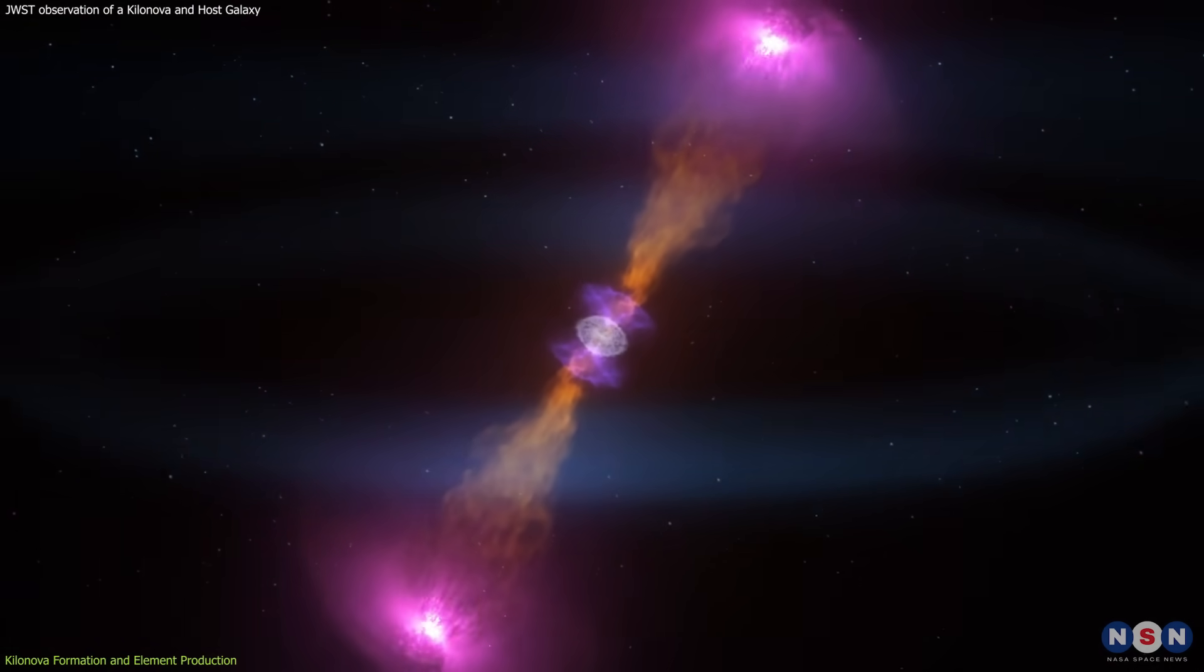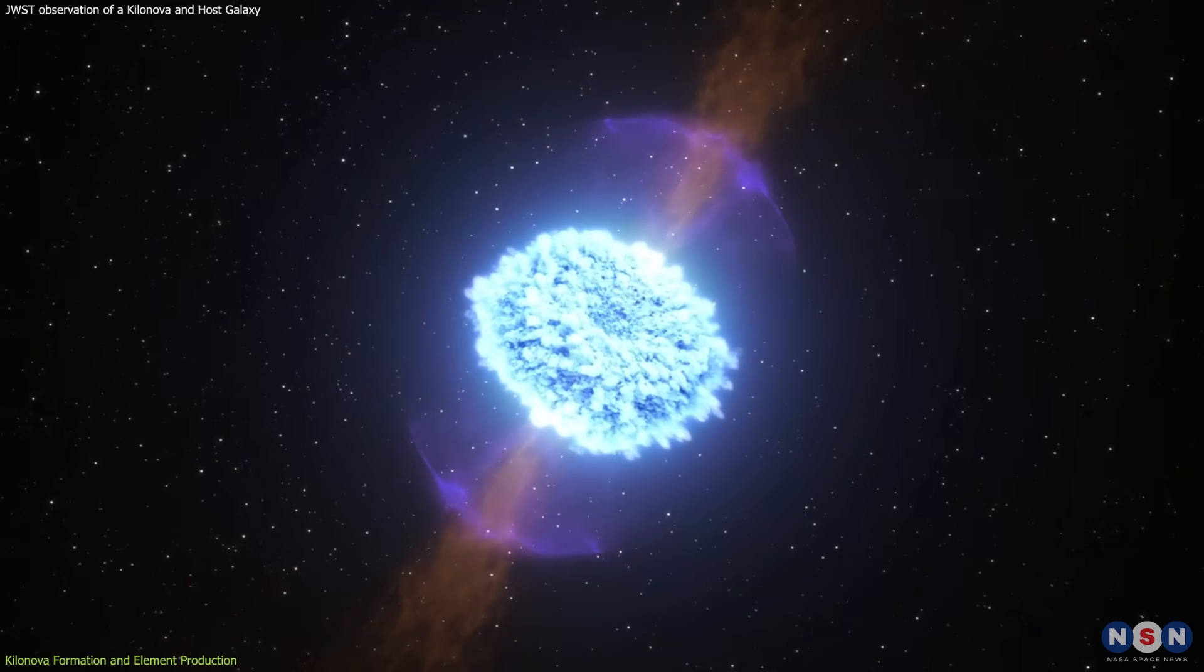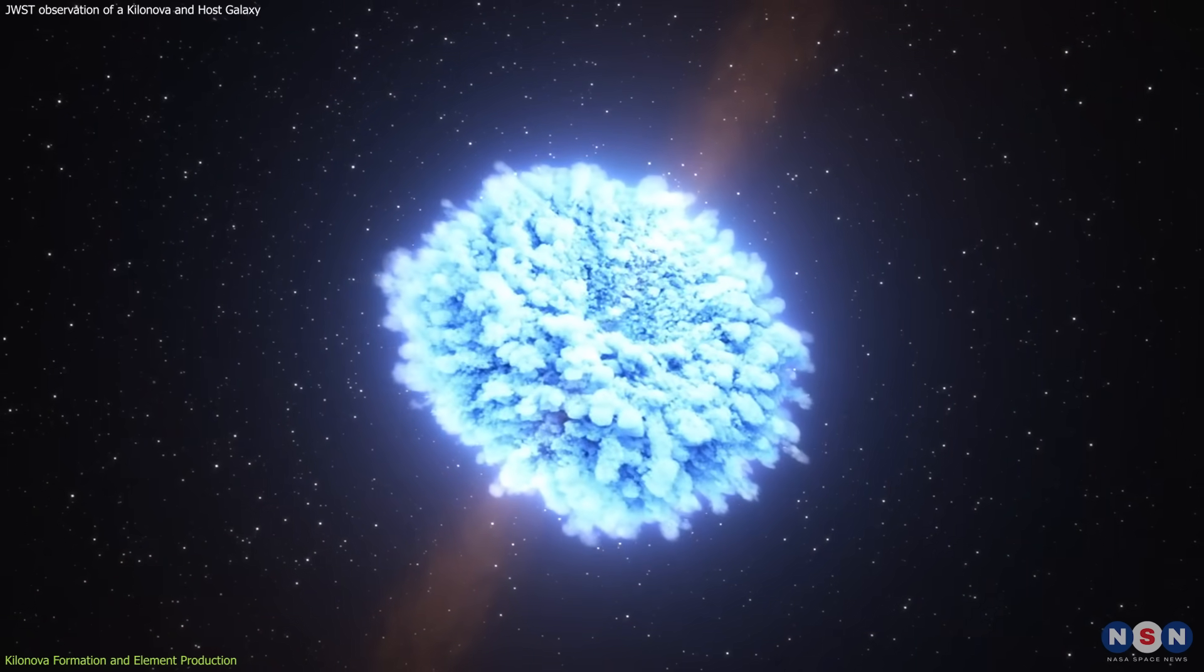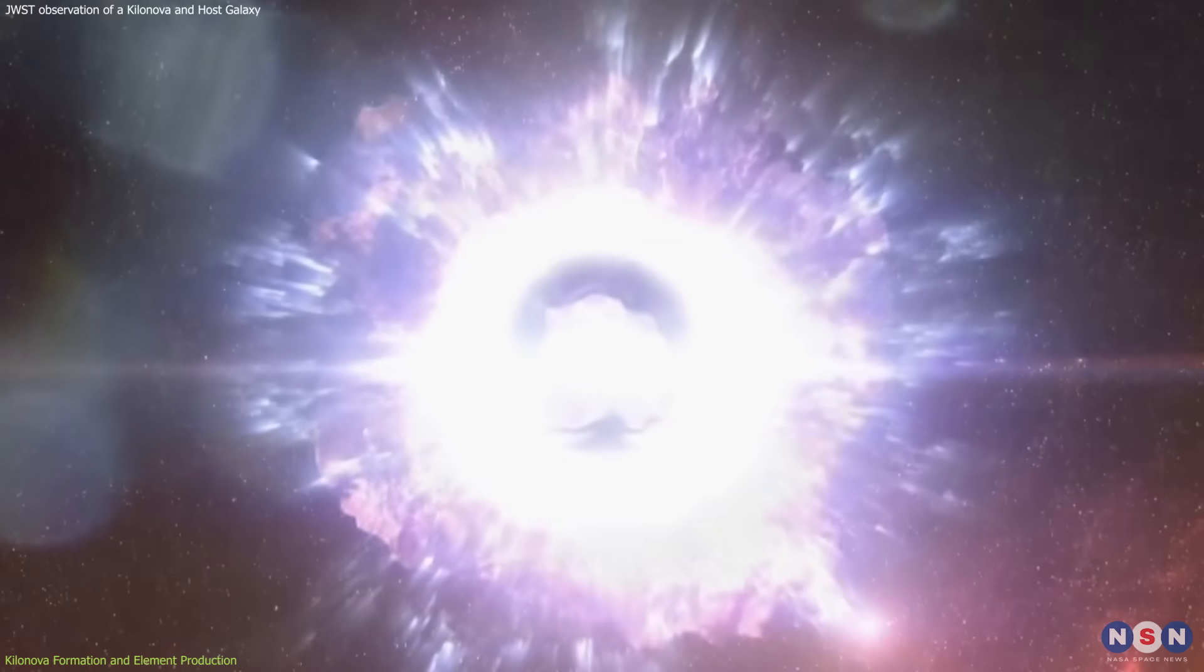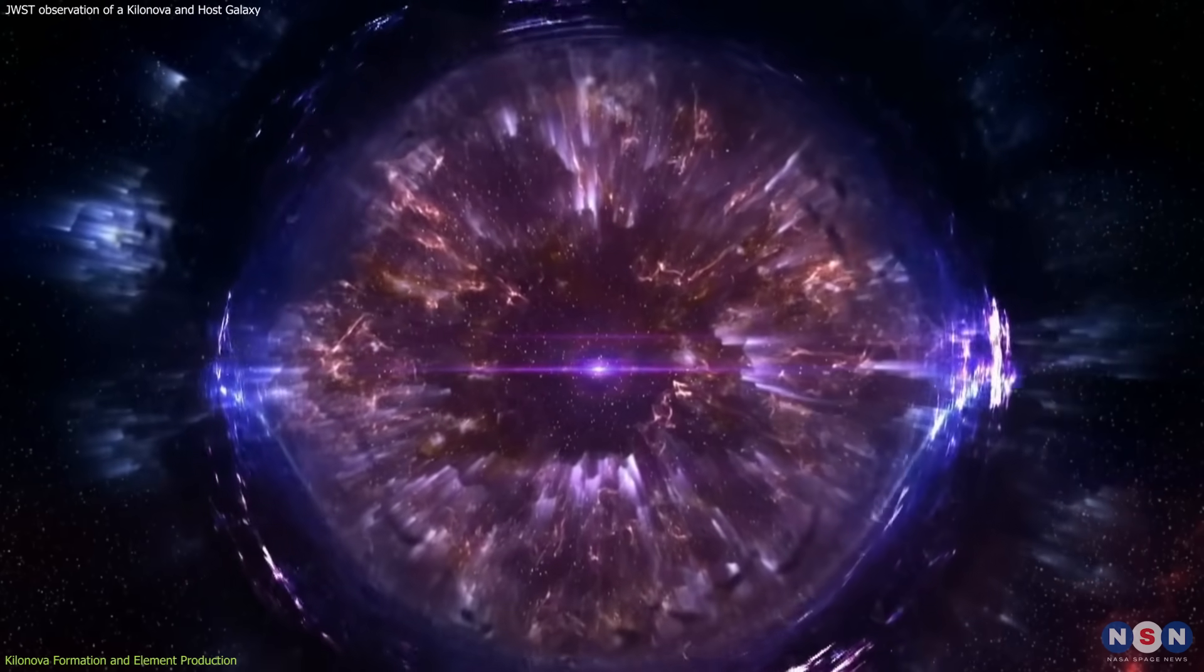They eject some of their material into space at high speeds, creating a cloud of radioactive debris that glows brightly in infrared light. This cloud is called a kilonova, and it is where some of the heaviest elements in nature are made.